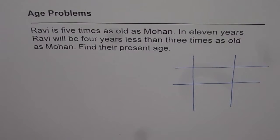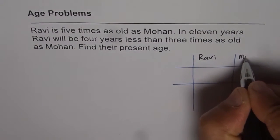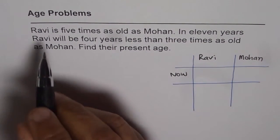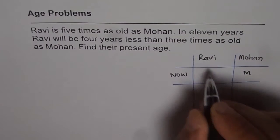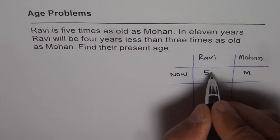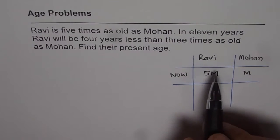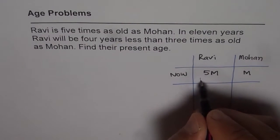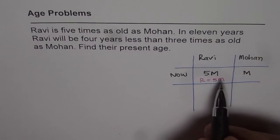So let us say this column is for Ravi and this column is for Mohan. As of now, Ravi is 5 times as old as Mohan. So let us say Mohan is M years old, then Ravi is 5 times M. This way we can use one variable. It is good to work with one variable in such cases.